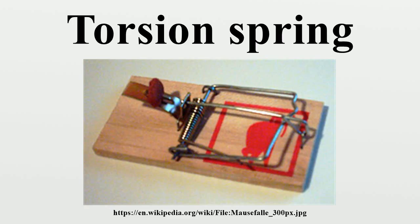A torsion bar is a straight bar of metal or rubber that is subjected to twisting about its axis by torque applied at its ends. A more delicate form used in sensitive instruments, called a torsion fiber, consists of a fiber of silk, glass, or quartz under tension that is twisted about its axis.